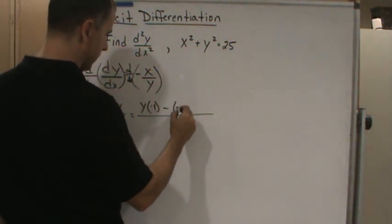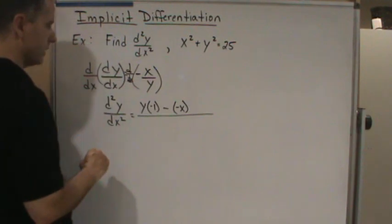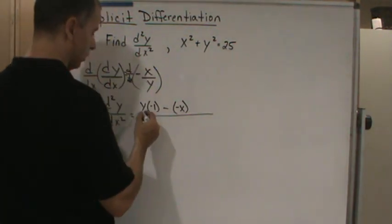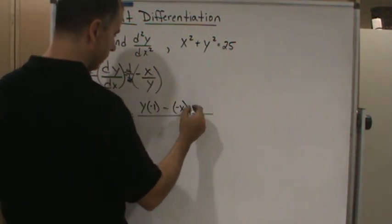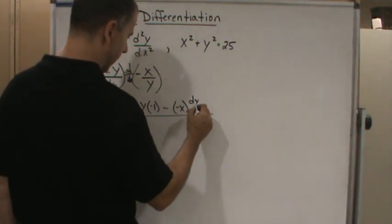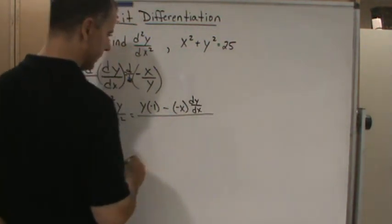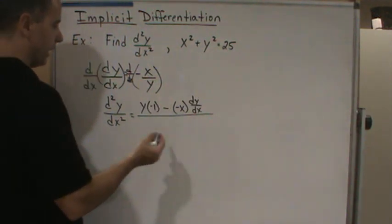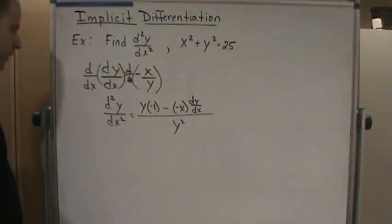minus the top, which is negative x, times the derivative of the bottom. So low d-high, so low d-high, high minus high d-low. So in this case, it's going to be dy/dx, divided by the bottom squared. So that's where you're going to get y squared.